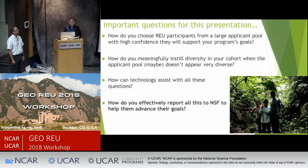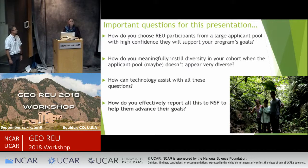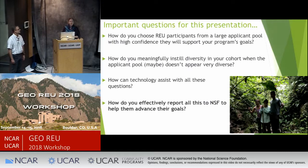As you're thinking about your selection process, it dawned on us that it's difficult to choose participants from a large applicant pool that will support your program goals because it's really a process of narrowing that pool. We want to meaningfully instill diversity in our cohort. We also wanted to find ways to use technology to assist us with this massive amount of applications, and to effectively report this back to NSF to help them advance their goals.